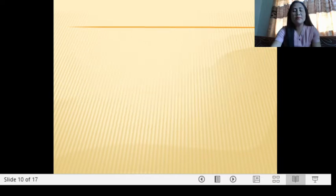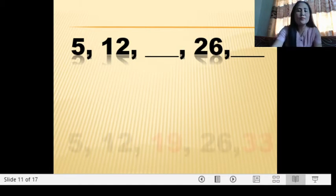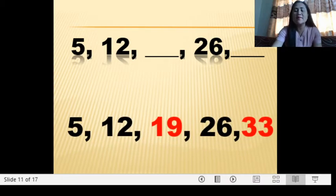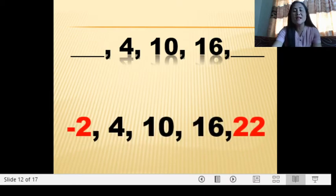Find the missing term in each arithmetic sequence. First: 5, 12, ___, 26, ___. The common difference is 7, so we add 7 to 12 to get 19, and we add 7 to 26 to get 33. The missing terms are 19 and 33. Next, the first and last terms are missing; the common difference is 6, so we subtract: 4 minus 6 is negative 2, and 16 plus 6 is 22. So we have negative 2 and 22.